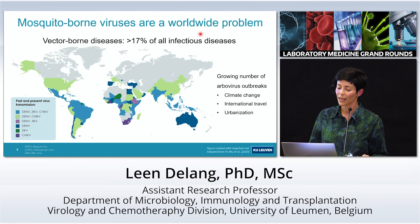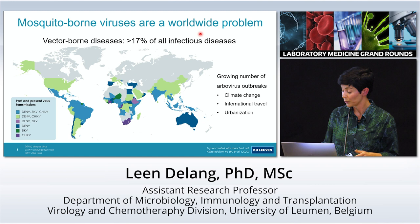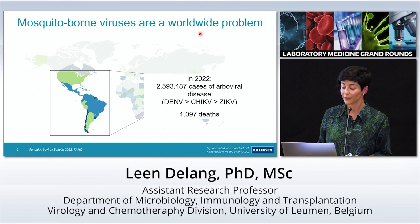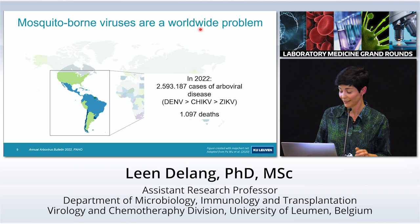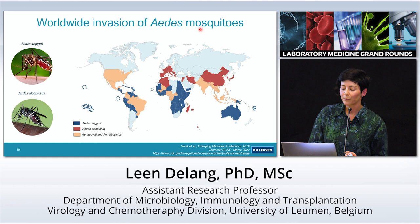We've also seen a growing number of arbovirus outbreaks due to climate change and international travel, mostly in temperate regions. But also in regions where viruses were already endemic, we see more outbreaks due to increased urbanization and growing human populations. In 2022 in the Americas alone, there were already more than 2,500,000 cases of arboviral disease diagnosed — mostly dengue, but also chikungunya and Zika — and more than 1,000 deaths.